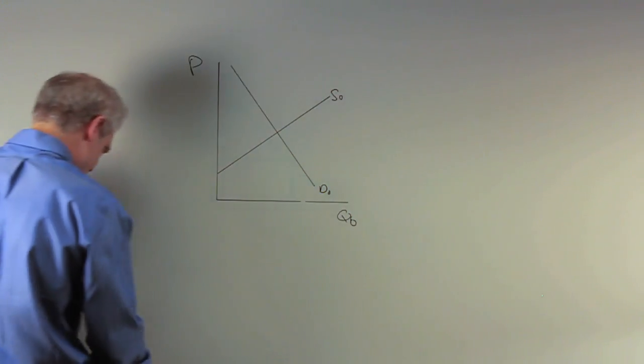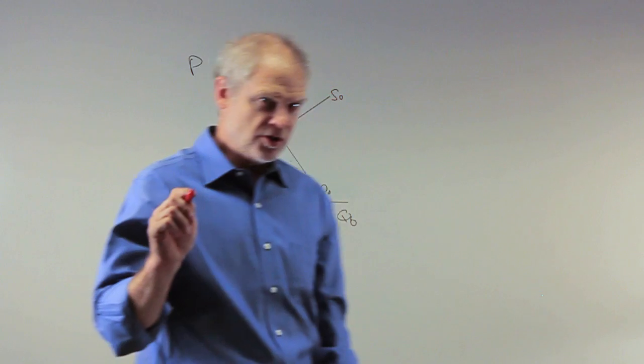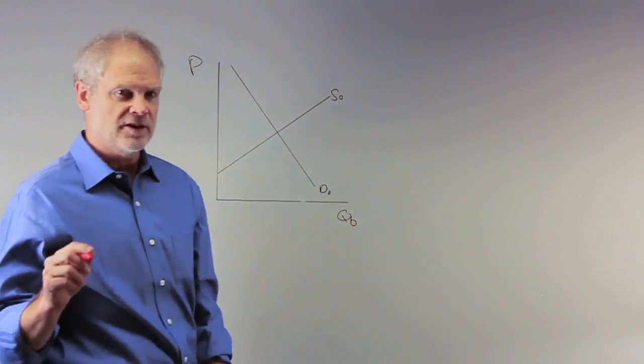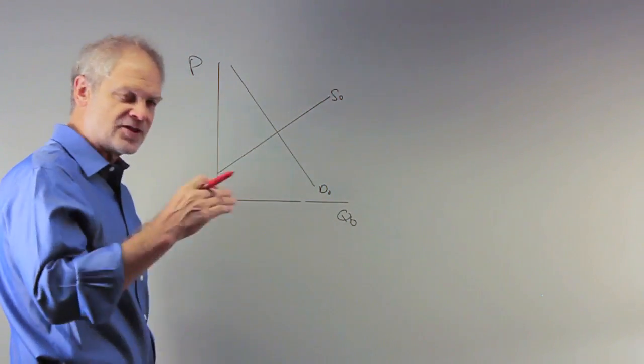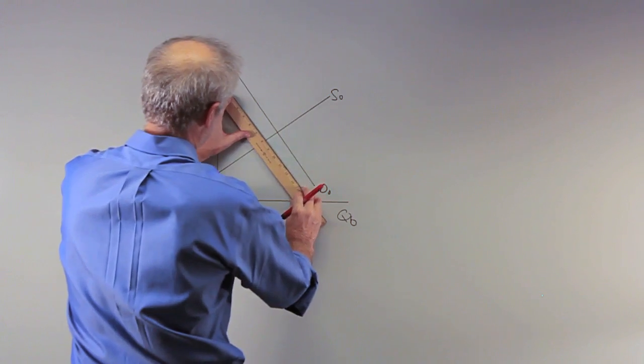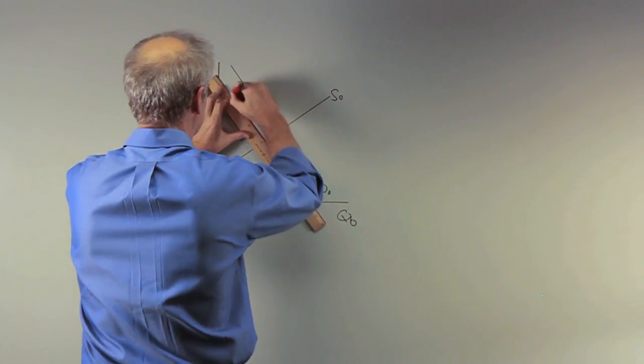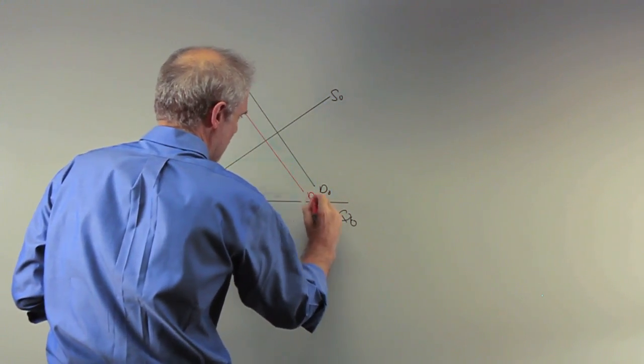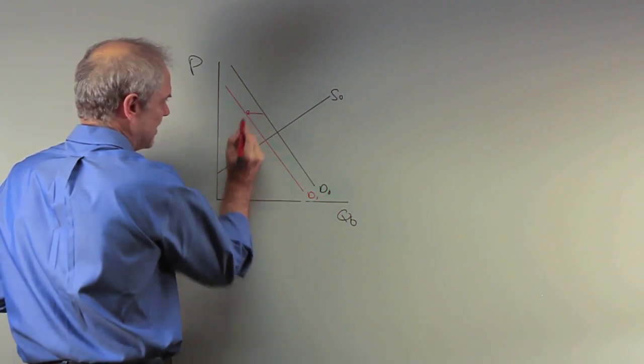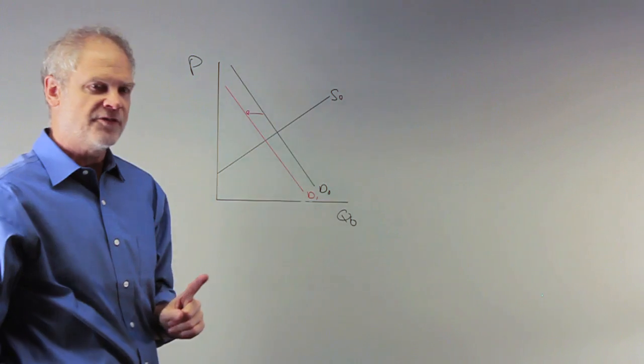Very typical what we've been doing here. So we're going to call this D0, we're going to call this S0. And now they say, let's take them one at a time. It says it's a normal good, but people's income have fallen. Well, if incomes fall and it's a normal good, the demand for that good is going to shift in. So this is our demand curve D1.